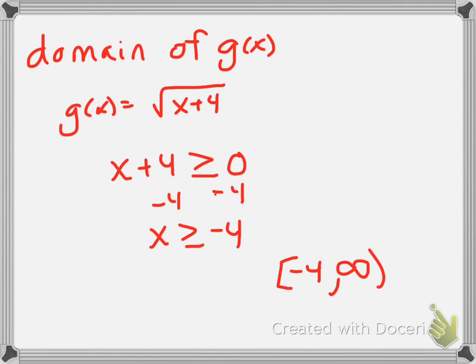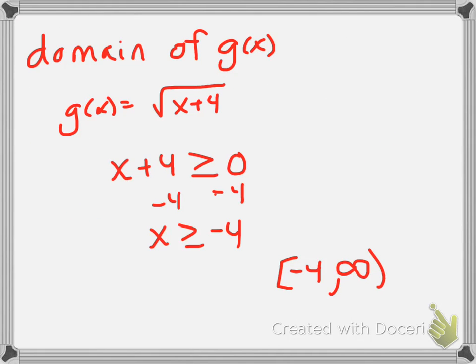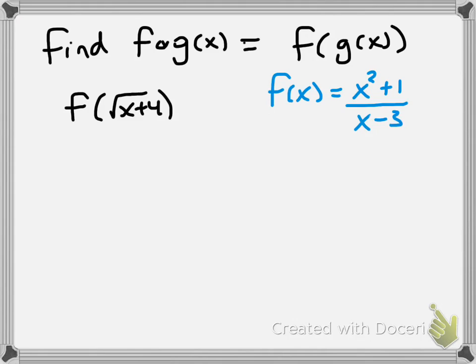So we're going to put g(x) inside of f(x), which is up here at x squared plus 1 over x minus 3. So again, here are my two functions. So recall that means that we put in for g(x). We put that into the f function. So in other words, I take the square root of x plus 4 and put it into x anywhere I see it in the f function.